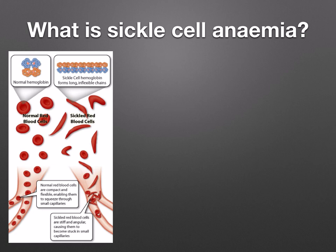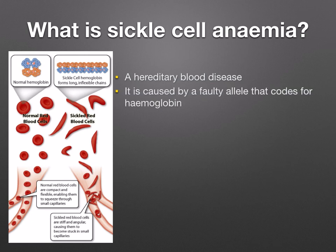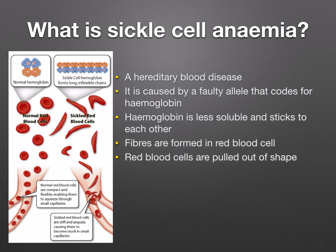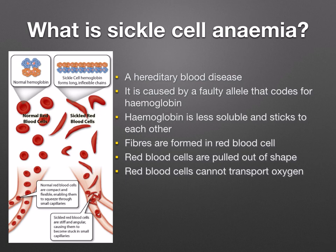So what is sickle cell anemia? This is a hereditary blood disease caused by a faulty allele that codes for hemoglobin. The hemoglobin is less soluble and sticks together, fibers are formed in the red blood cells, and the red blood cells are pulled out of shape. These red blood cells cannot transport oxygen and may block small capillaries.